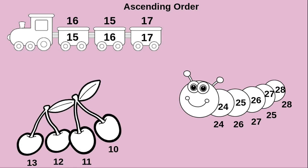Now we will see another example: 13, 12, 11, 10. The smallest is 10, then 11, then 12, then 13. Now we have arranged these numbers in ascending order. So now we all know what ascending order is — ascending order is nothing but arranging the numbers from smallest to greatest.